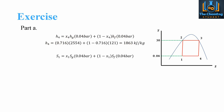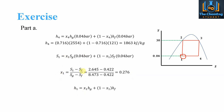For point 1, still at 0.04 bar, we use the same mixture equation to find x1. Rearranging gives x1 = 0.276, meaning 27.6% vapor in the mixture at point 1, compared to 71.6% vapor at point 4. Substituting these values, we determine H1 = 792.5 kJ/kg.